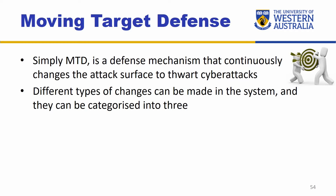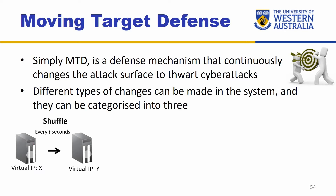Different types of changes can be made in the system and they can be categorized into mainly three types. The first one is the shuffle. For example, the virtual IP address can be changed every T seconds — this is shuffling. Not just the IP address, but it can be applied to the routings, the system calls, directions, etc. Many things can be shuffled in different layers of the system.